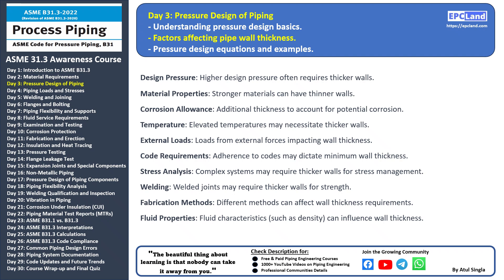Different fabrication methods, such as seamless or welded construction, can also influence the required wall thickness. The properties of the fluid being transported — such as density, viscosity, and corrosiveness — can impact the wall thickness required to handle the fluid's characteristics. Understanding these factors and their interactions is crucial for designing a piping system with the appropriate wall thickness to ensure safe and reliable operation.